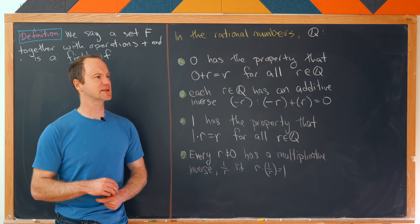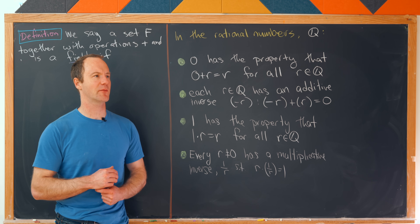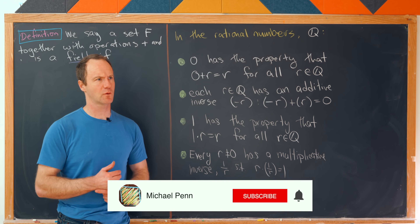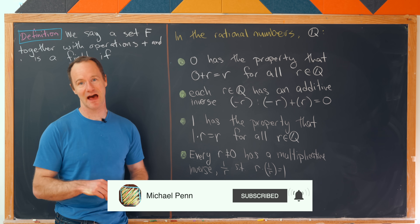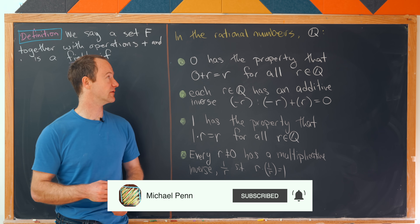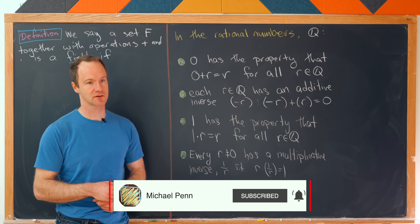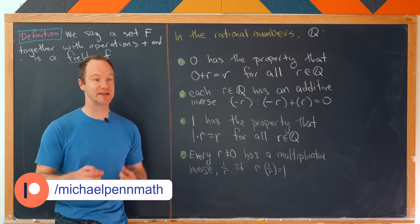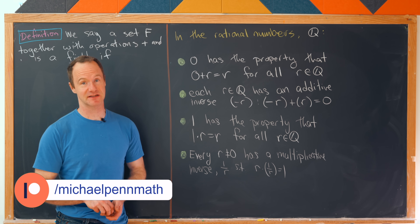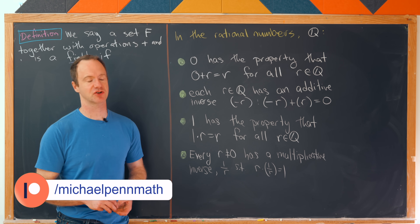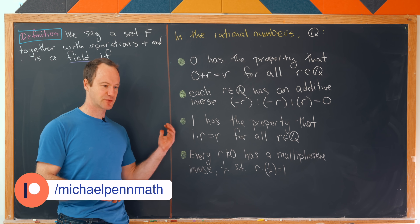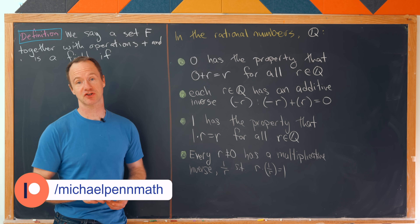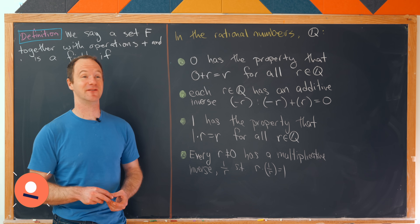Today we're going to look at what I think is an interesting property of the number zero and why it in fact can't have a multiplicative inverse. Before we do that, let's recall some pretty standard facts about the rational numbers and then we'll abstract those to an algebraic structure known as a field.